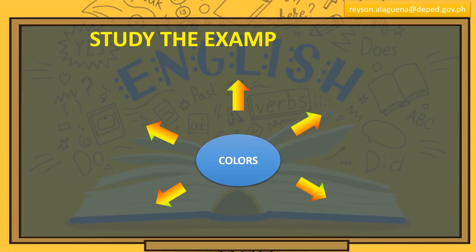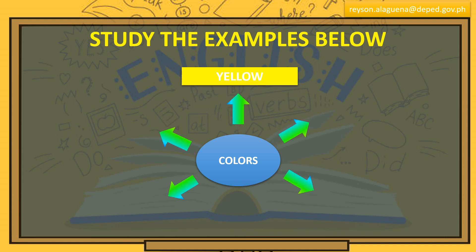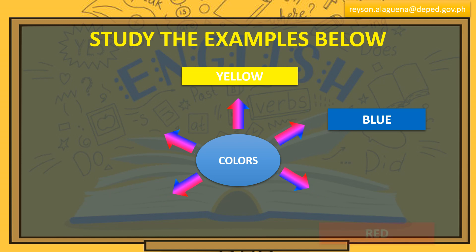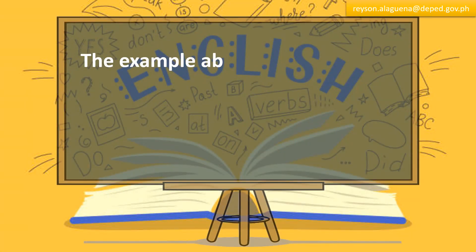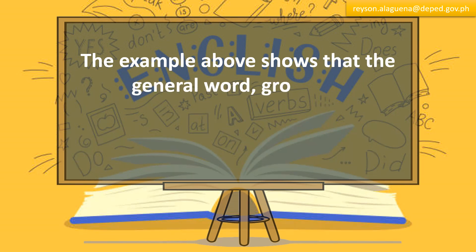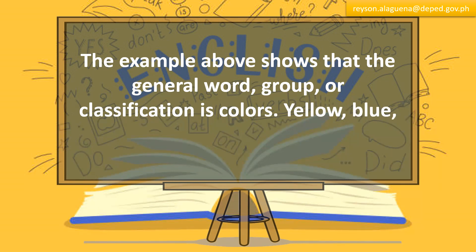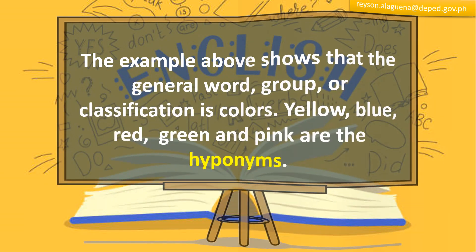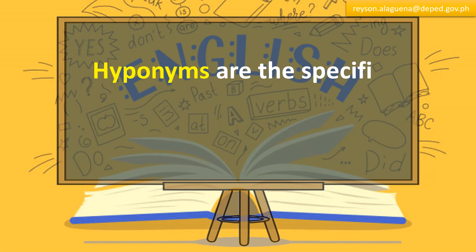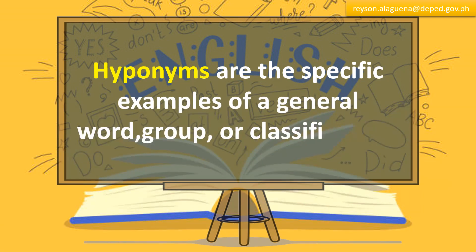Study the examples below. Colors: yellow, blue, red, green, pink. The examples above show that the general word, group, or classification is colors. Yellow, blue, red, green, and pink are the hyphonemes. Hyphonemes are the specific examples of a general word, group, or classification.